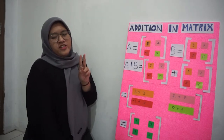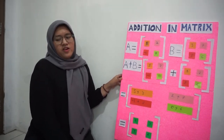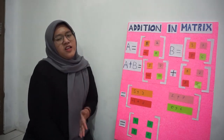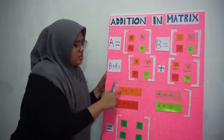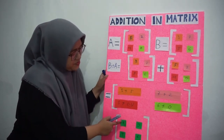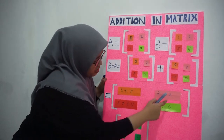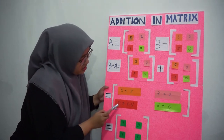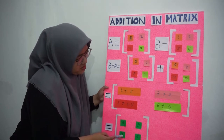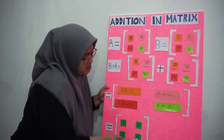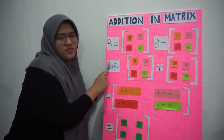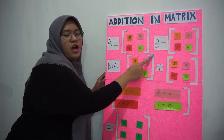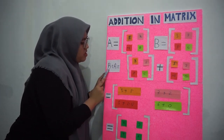The second rule in addition of matrix is the sum of the corresponding elements. The corresponding element is the element which has the same position. What if matrix B plus matrix A? The sum of 3 and 5 is 8. The sum of 7 and 2 is 9. The sum of 5 and minus 1 is 4. The sum of 6 and 0 is 6. The calculation shows that matrix A plus matrix B equals matrix B plus matrix A.